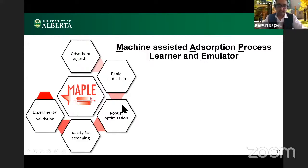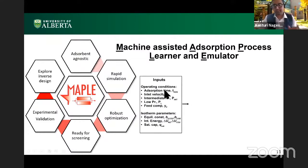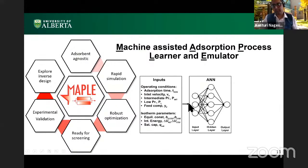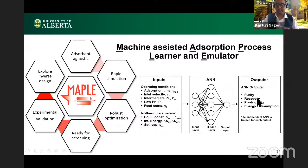So the basics here is that this neural network model takes in the same inputs as what our detailed model does, such as your times, pressures, and velocities, but also the isotherm parameters, such as your saturation capacity, your heat of adsorption, or your equilibrium constant, your Henry constants. So what we do with these inputs is we feed it to our trained neural network and it gives us performance indicators like purity, recovery, etc., instantaneously, versus before we had to iteratively solve our equations till we reach cyclic steady state.